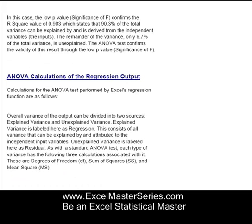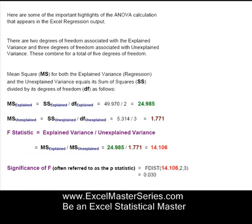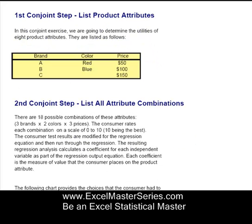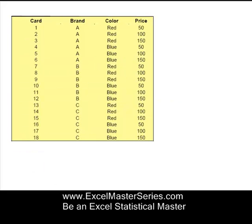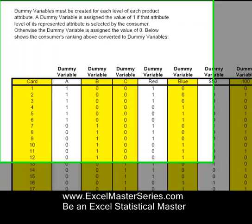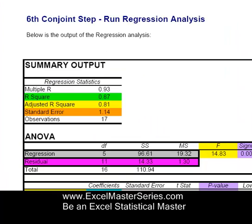I don't use complicated statistical language — everything's explained as simply as possible. This manual is created for business managers. Here's regression using dummy variables, using an advanced marketing technique called conjoint analysis. There's a seven-step process — it's really not that hard once you see how to set it all up in Excel. I'll walk you through that slowly and carefully, and you'll be a master at this.